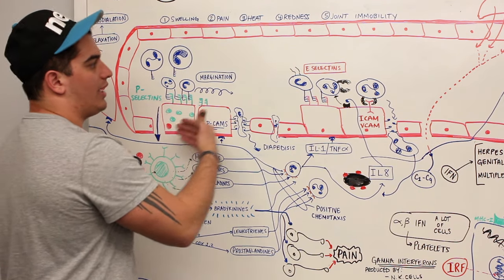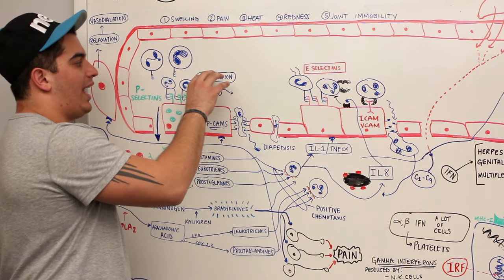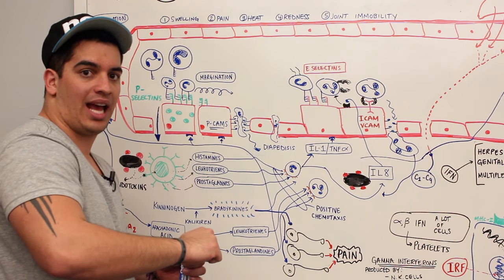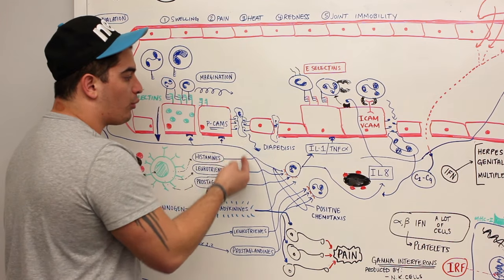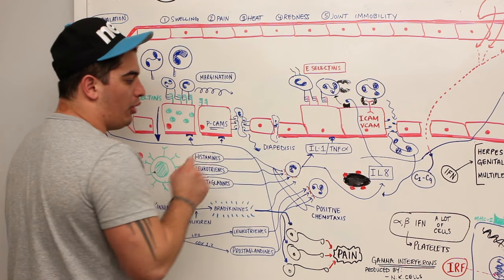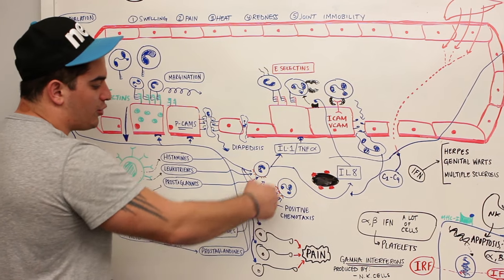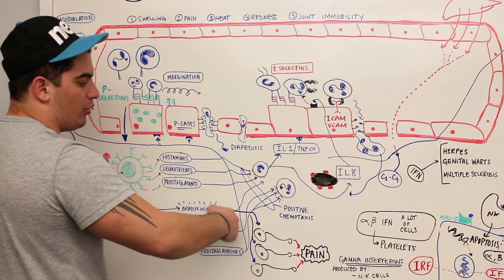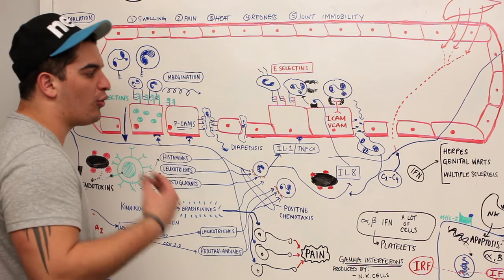These could be P-selectins, E-selectins, ICAMs and VCAMs. Their purpose is to enhance the margination response - clinging to the edge of the capillary bed and rolling on the surface. As it rolls, it can move through the endothelial cells by diapedesis, which is that amoeboid motion. Then it can migrate to the site of injury where all these bacteria molecules are, moving towards that area by positive chemotaxis.